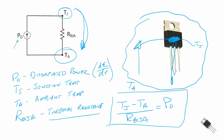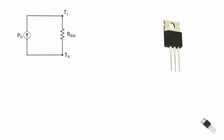In design, we typically aren't using equalities; we will be using upper limits or greater than and less than. Now there's one other component not shown here, but it's the case. The case allows us to mount a heat sink or provides an additional way to remove energy out of the device.